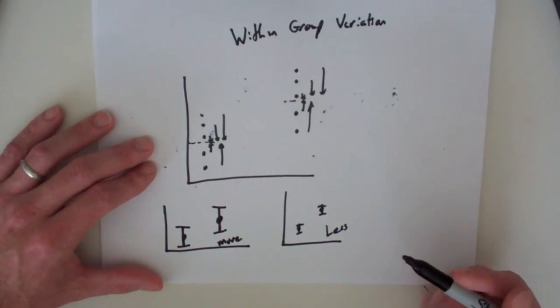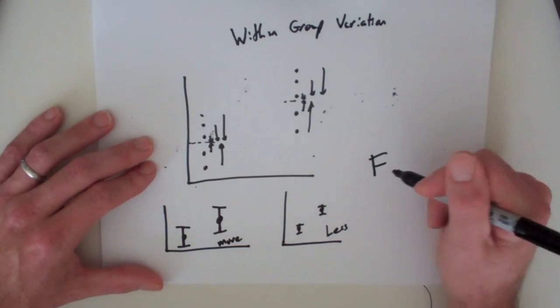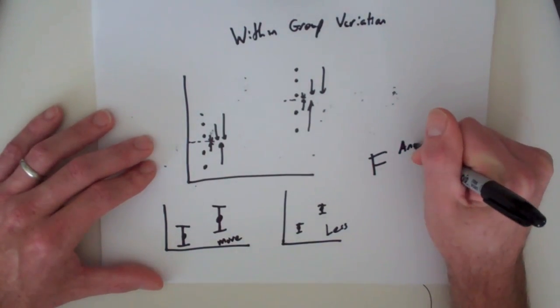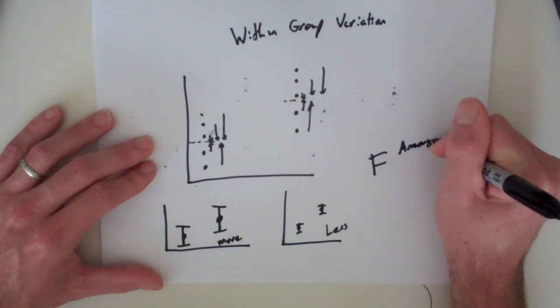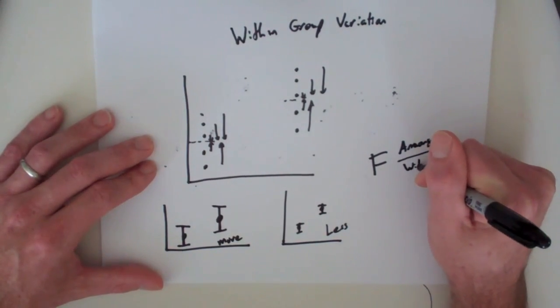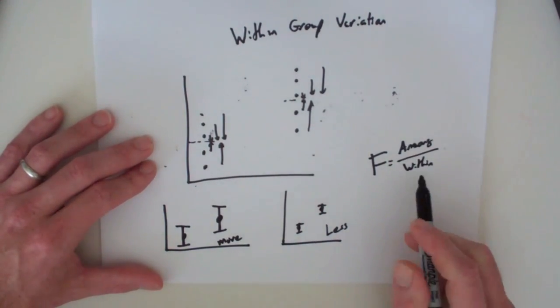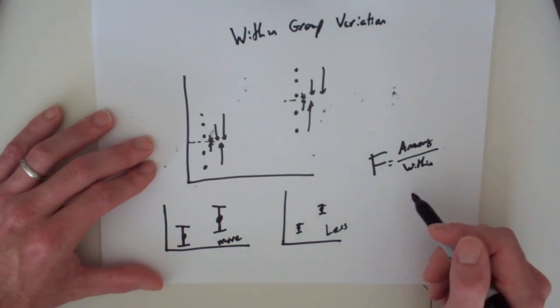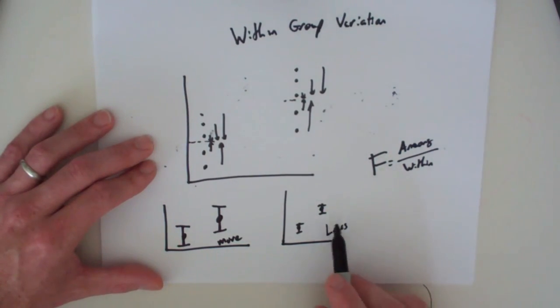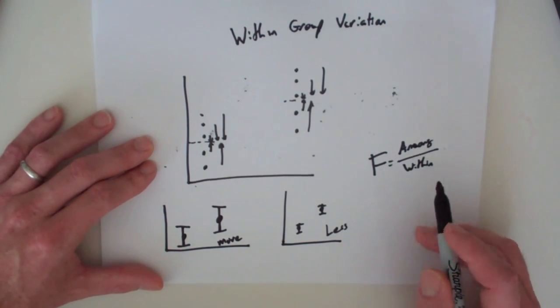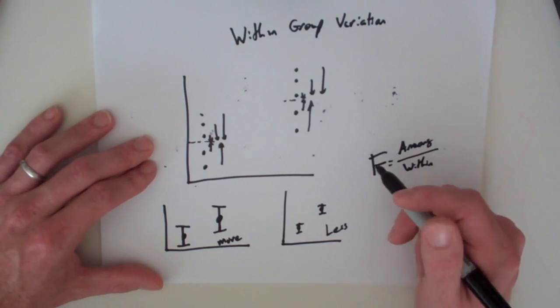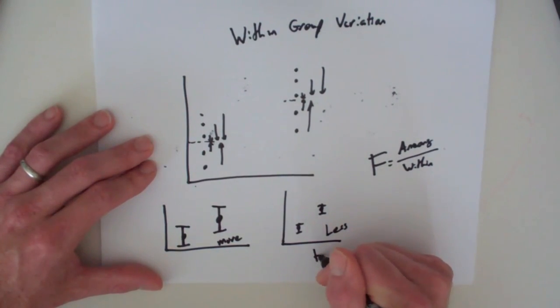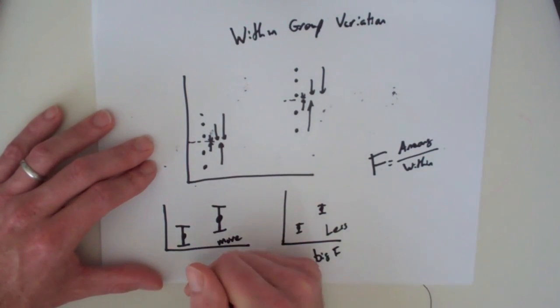What that's going to do is change the F, because this is among over within, and here we're talking about within group variation. A smaller value in the denominator is going to cause F to be bigger. So, big F, small F.